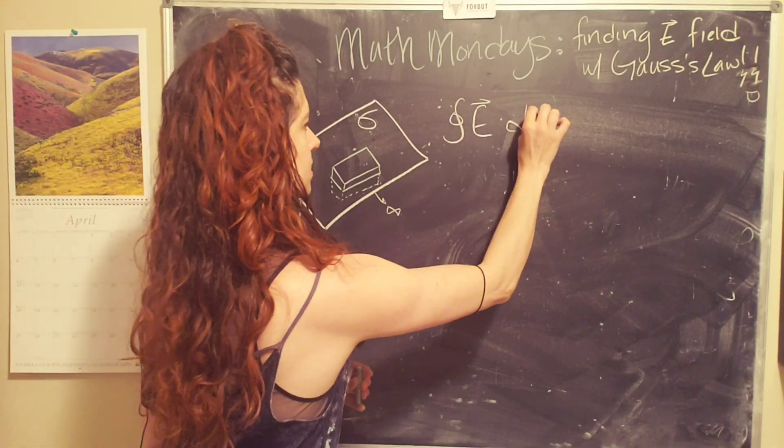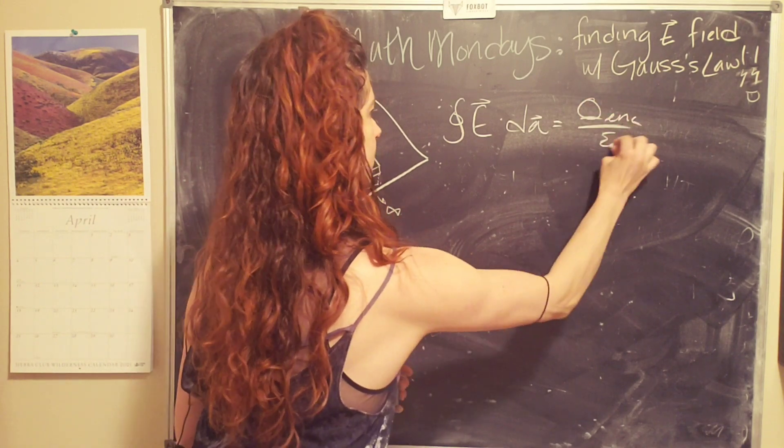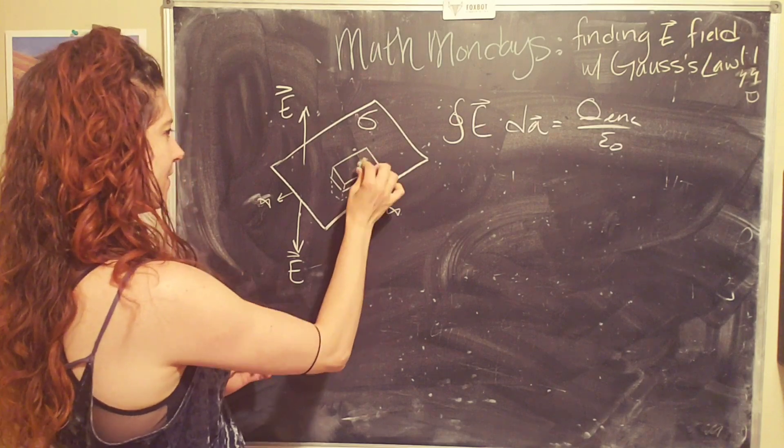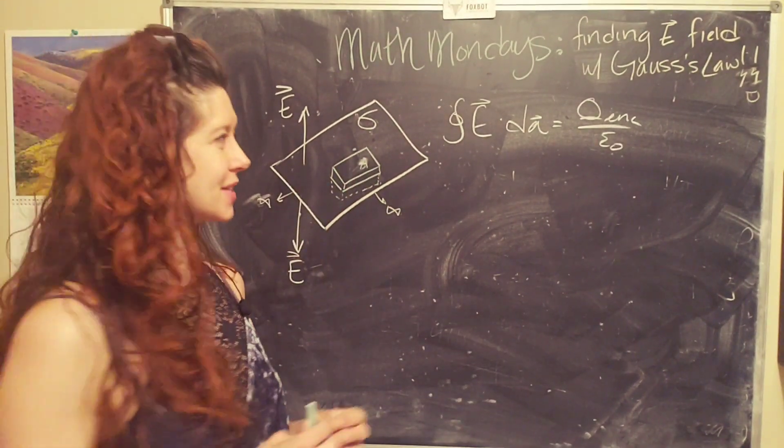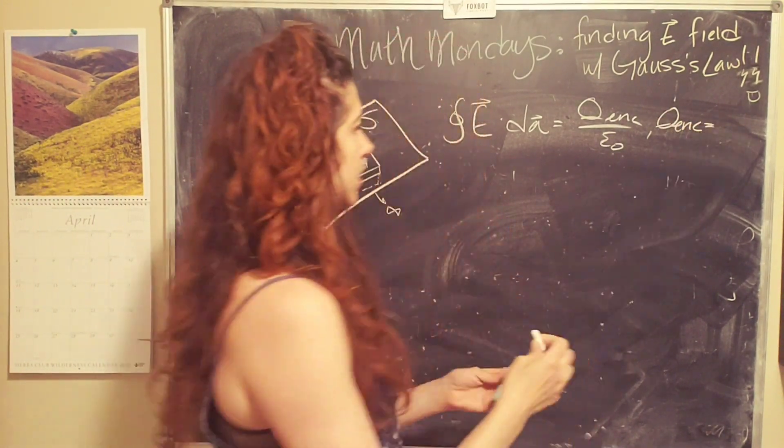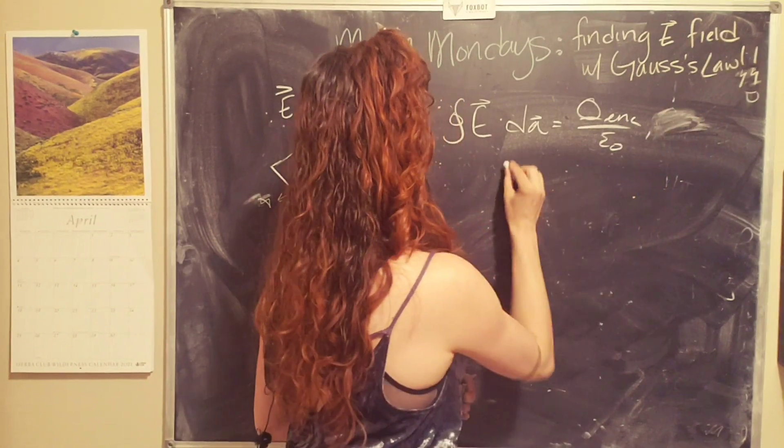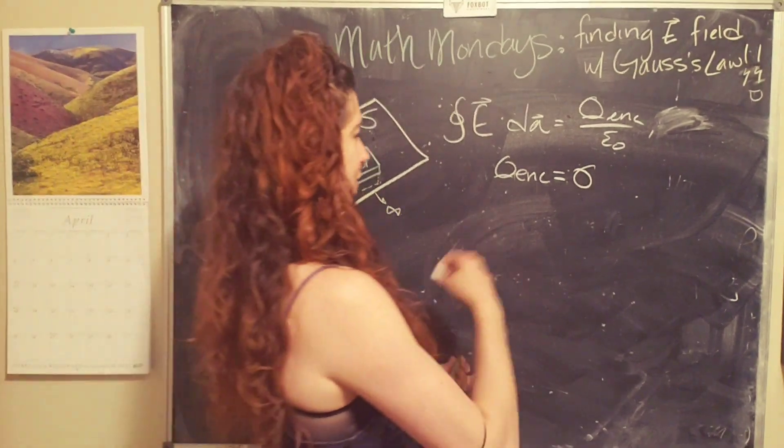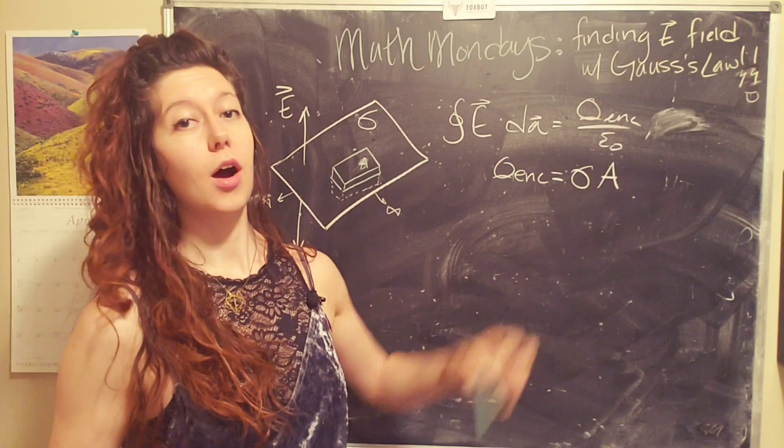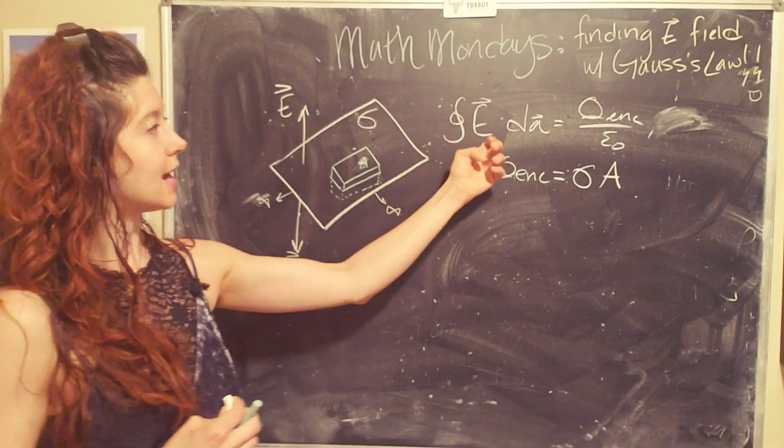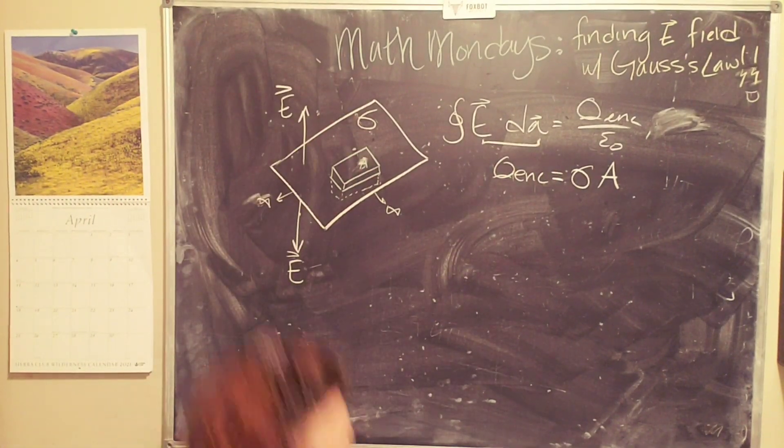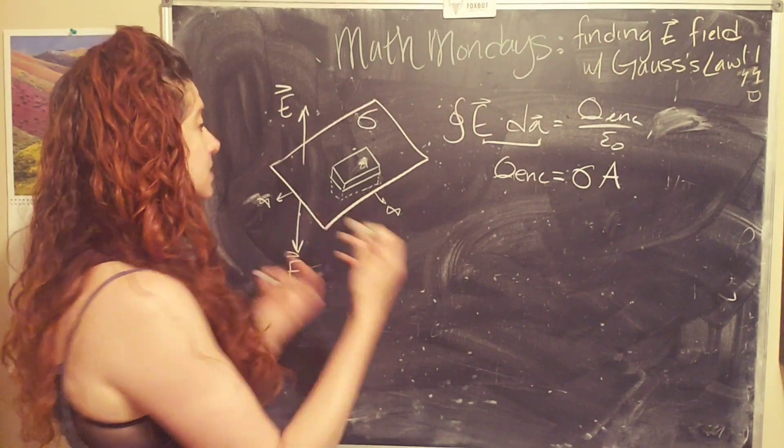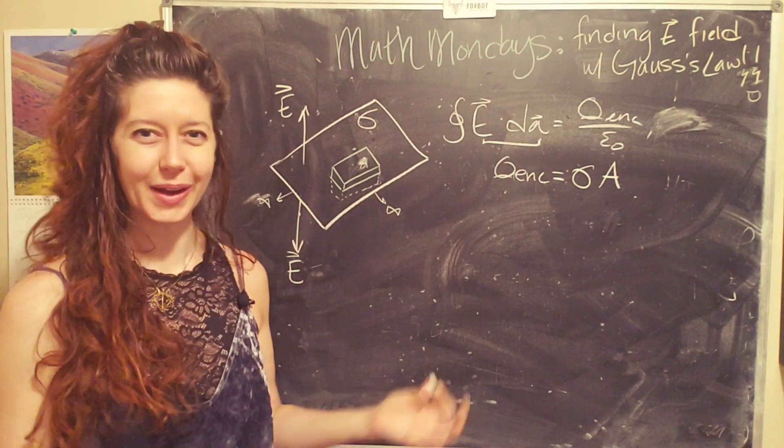Okay. So, Gauss's law, the electric flux equals q enclosed over epsilon naught. In this case, our surface is going to have, well, I'll do it in green. Our surface is going to have area A for our little Gaussian pillbox. So that means that q enclosed is going to equal, I'm going to write this down here so we have more space. Q enclosed equals the surface charge density times the area of our little pillbox. Okay. And now we need to figure out, whoa, I lost my green. Oh no. Okay. Now we need to figure out, what is happening with this dot product.